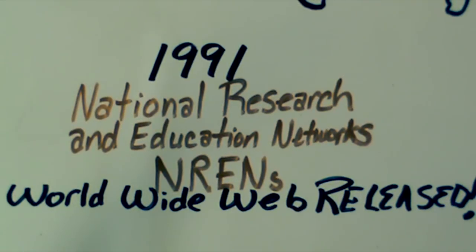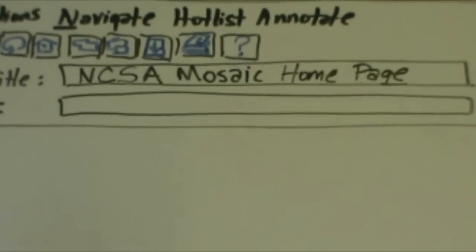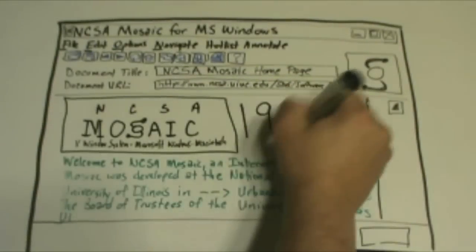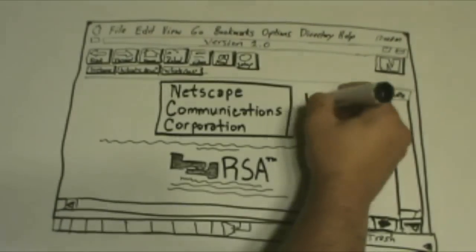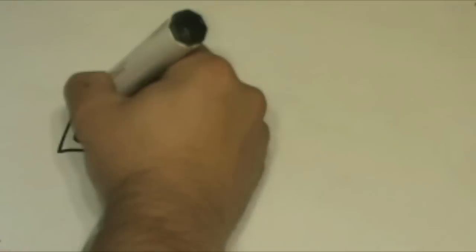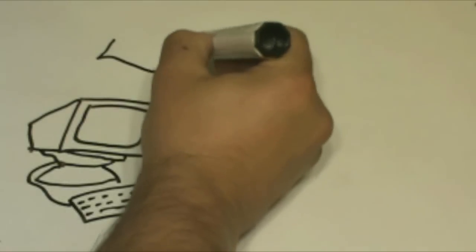The Internet was still dominated by scientists and other academics, but public interest was largely increased. With the release of the Mosaic Web Browser in 1993 and Netscape in 1994, interest in and use of the World Wide Web exploded. More and more communities became wired, enabling direct connections to the Internet.